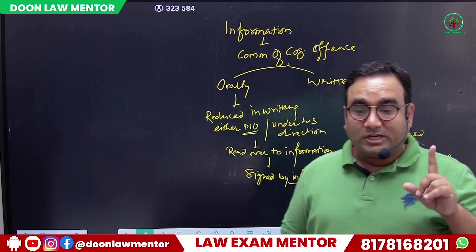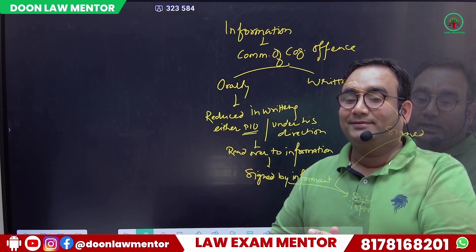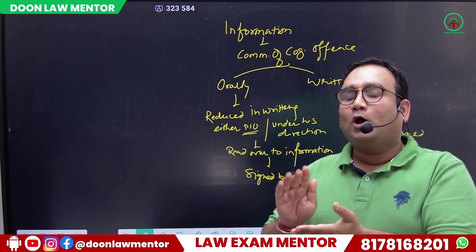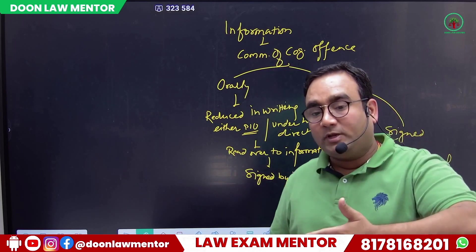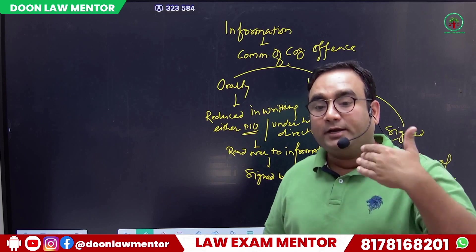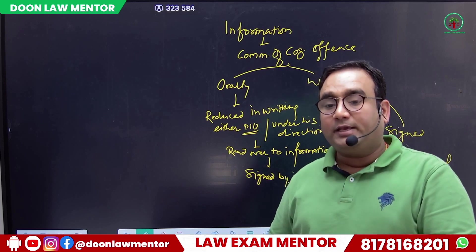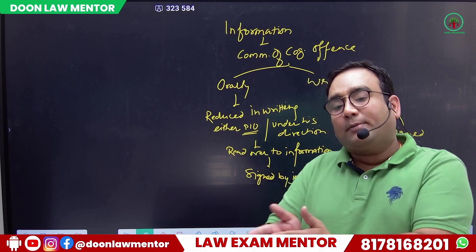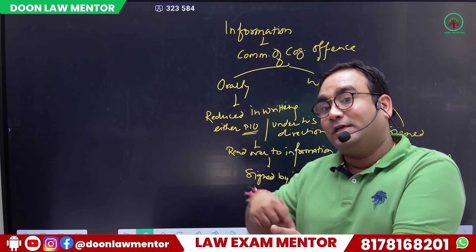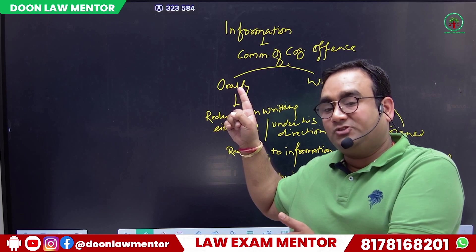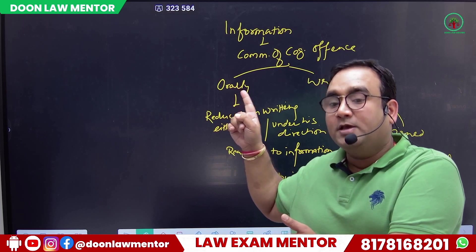Up to Section 154(BS), the written information — reduced to writing — is attached as a copy with the FIR. This entire information then goes before the magistrate under Sections 157 and 158, so that the magistrate can take cognizance.